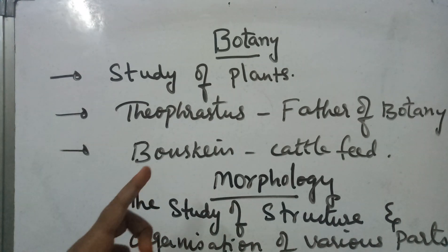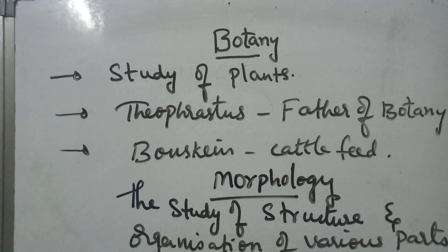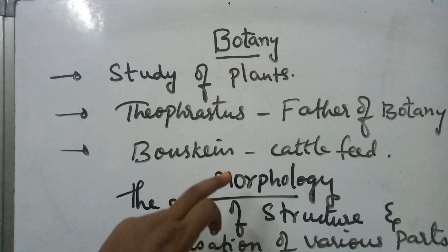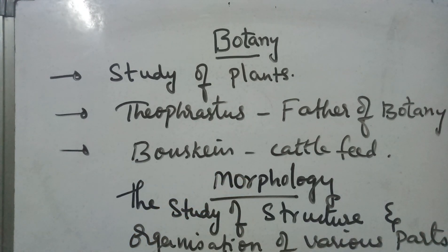Morphology is a branch of biology that deals with the structure of various parts of an organism. Plant morphology deals with the structure of various parts of the plant body, while animal morphology deals with animal body parts. In our first year textbook, morphology is a very important chapter and we are going to discuss its introduction now.